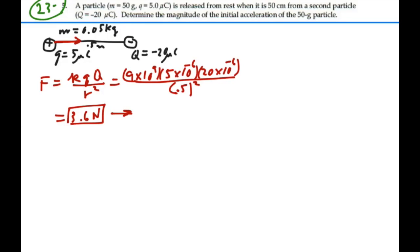Well, if this is our only force acting on the particle, then it should be true by Newton's second law that mass times acceleration will equal this force. So our acceleration will equal the force divided by the mass, 3.6 divided by 0.05 kilograms. And that gives us 72 meters per second squared.